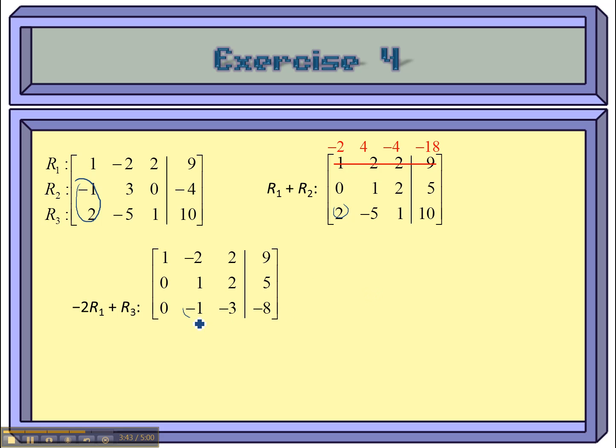So, now I have to get rid of this negative one. And I'm going to use the previous equation to get rid of it. All I have to do is add up r2 and r3, and I'll be there.